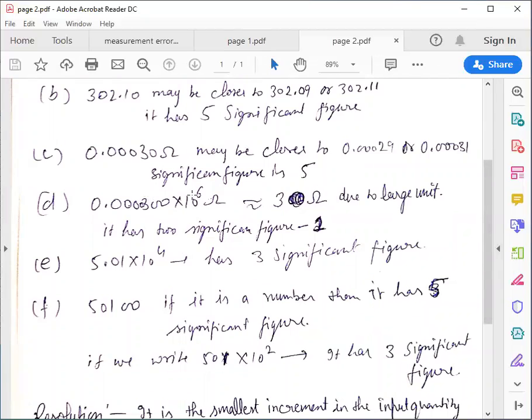So here significant figure is 1 because after the numerical value, if last digit is 0, it is not counted. Now in part E, 5.01 × 10^4 has 3 significant figures.